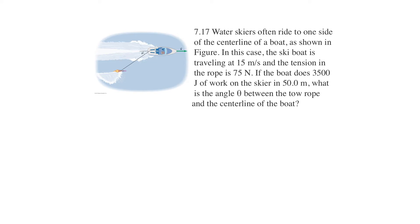Water skiers often ride to one side of the center line of the boat, as shown in the figure. In this case, the ski boat is traveling 15 meters per second, and the tension in the rope is 75 newtons. If the boat does 3,500 joules of work on the skier in 50 meters, what's the angle theta between the tow rope and the center of the boat?